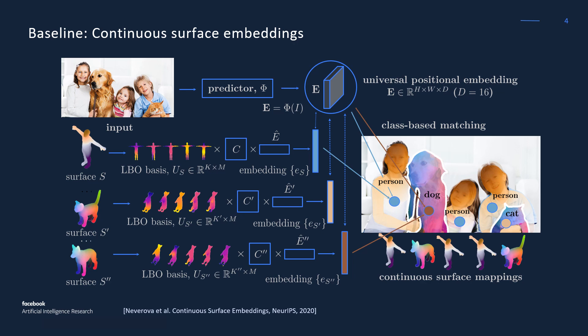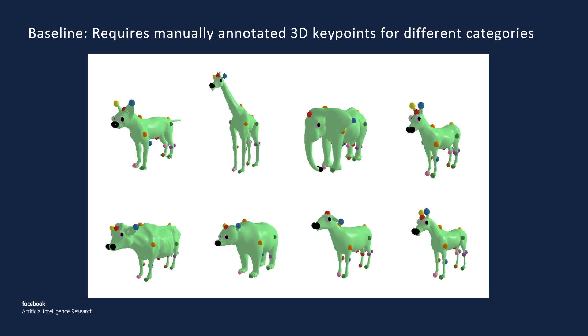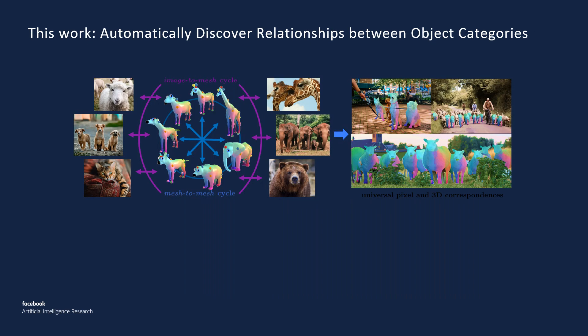However, to relate representations of different object categories, it requires manually annotated key points across different object meshes. Our method discovers high-quality correspondences between different object classes automatically, as an actual byproduct of learning category-specific dense pose predictors. It does so by enforcing cycle consistency between reference 3D templates as well as by a new type of consistency between images and 3D templates. So no manually annotated 3D correspondences are required.